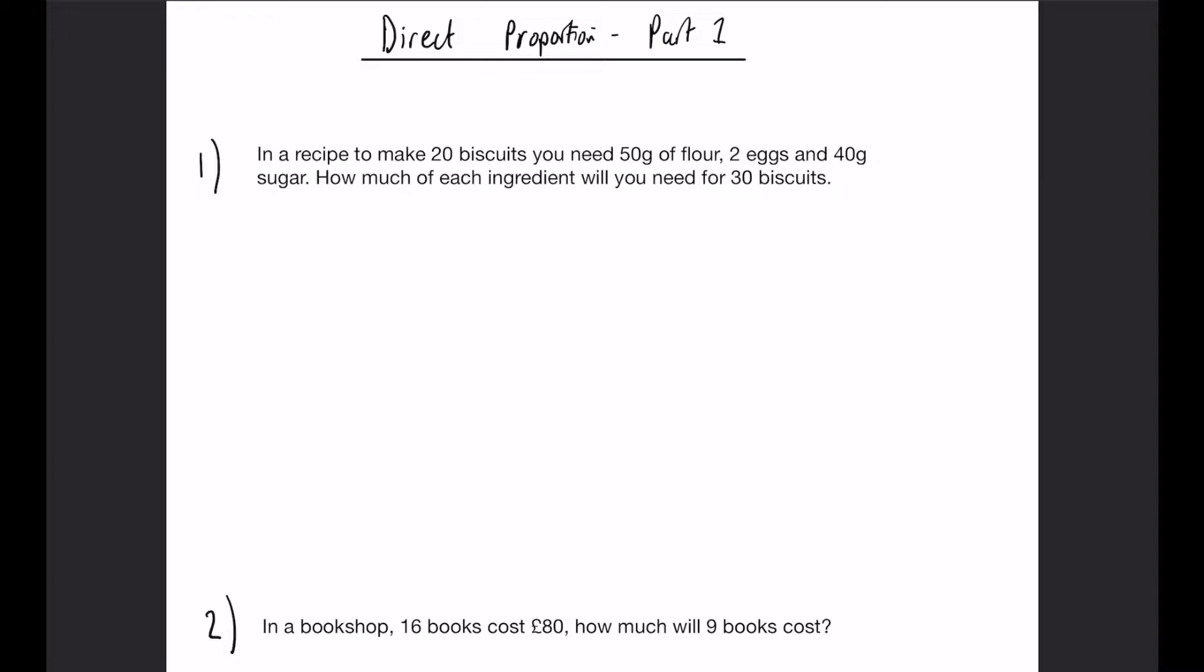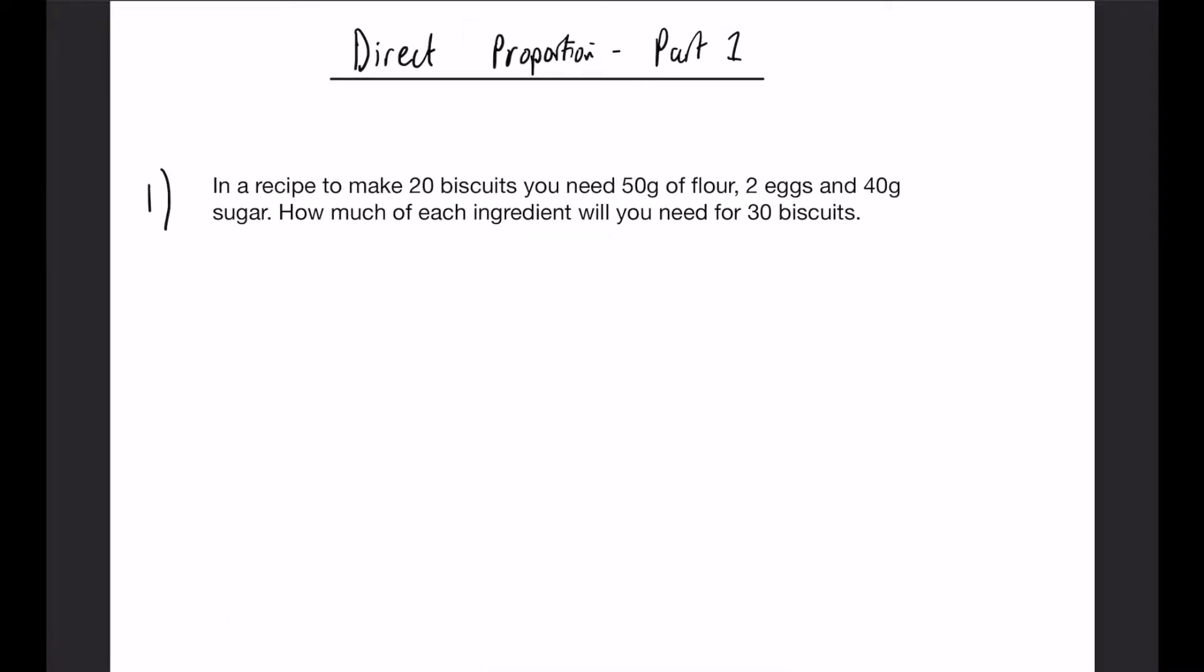So question one: in a recipe to make 20 biscuits you need 50 grams of flour, 2 eggs, and 40 grams of sugar. I'm going to first make a note of this. So 20 biscuits, we need 50 grams of flour, 2 eggs, and 40 grams of butter.